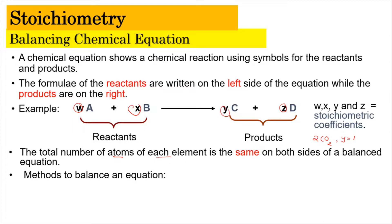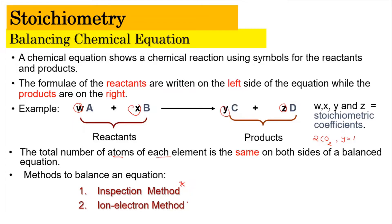The total number of atoms of each element needs to be the same on both sides of a balanced equation — meaning the same number of atoms on the reactant side must equal those on the product side. To balance an equation, there are two ways: the inspection method, which we'll look at in this video, and the ion-electron method for the next video. The inspection method covers normal chemical equations, while the ion-electron method focuses on redox equations.